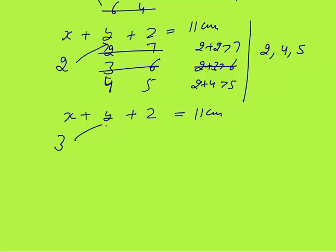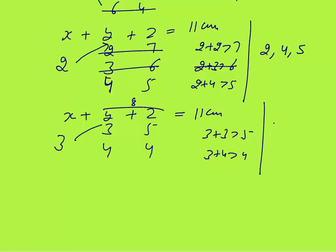Now taking x equals 3: combinations are (3, 4, 4) and (3, 3, 5). Checking (3, 4, 4): 3 plus 3 is greater than 4 — yes, triangle. (3, 3, 5): 3 plus 3 = 6, greater than 5 — yes, triangle. Both make triangles. So that gives us two more triangles.